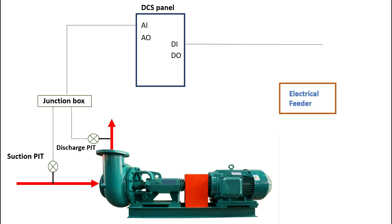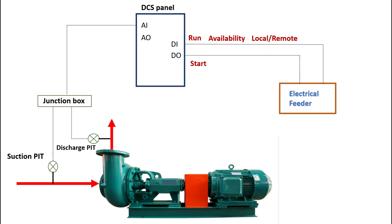We have digital input signals such as run feedback, availability, and local/remote indications. These are the basic digital inputs running from the electrical feeder to the DCS panels.